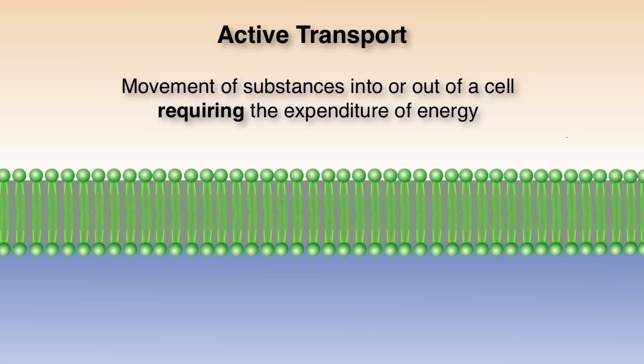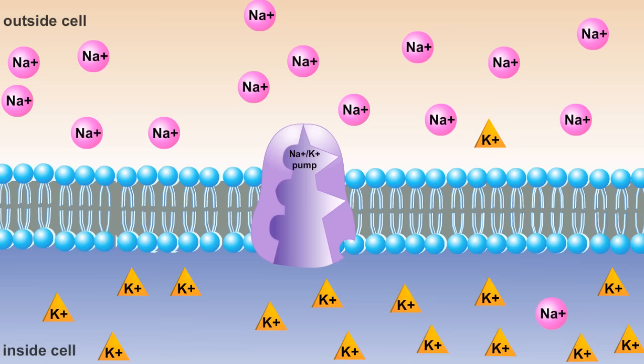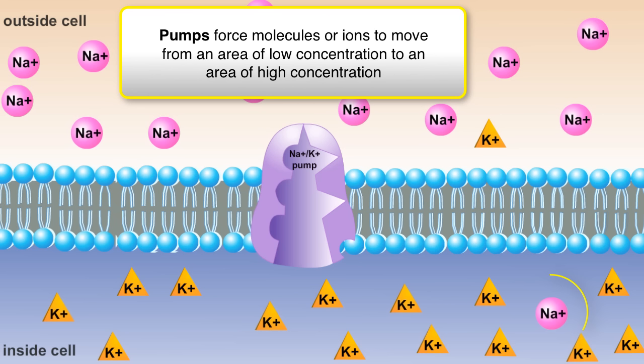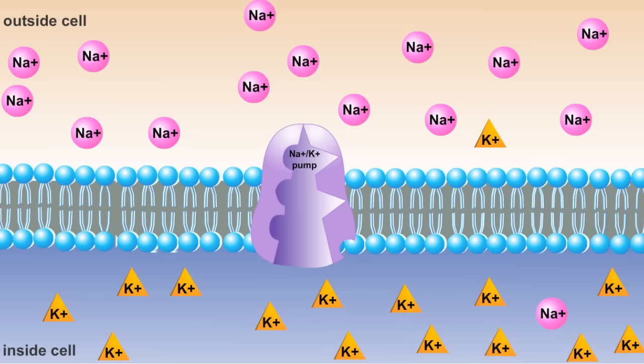Active transport is a type of cell transport that requires the input of energy in the form of ATP. The proteins that conduct this form of transport are often called pumps because they force molecules or ions to move from an area of low concentration to an area of high concentration. This is commonly referred to as moving against the concentration gradient.